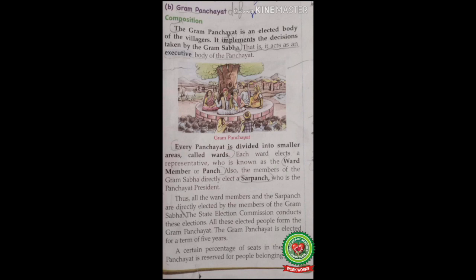Every panchayat is divided into smaller areas called wards. Each ward elects a representative known as the ward member or panch. Also, the members of the gram sabha directly elect a sarpanch, who is the panchayat president — also known as the mukhiya of the panchayat. All the ward members and the sarpanch are directly elected by the members of the gram sabha. The state election commission conducts these elections, and all these elected people form the gram panchayat. The gram panchayat is elected for a term of five years.